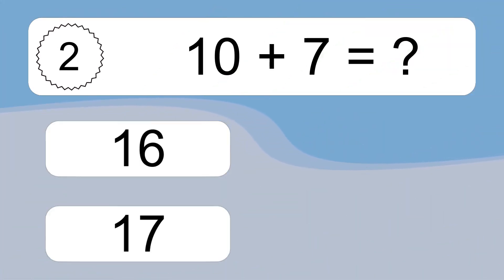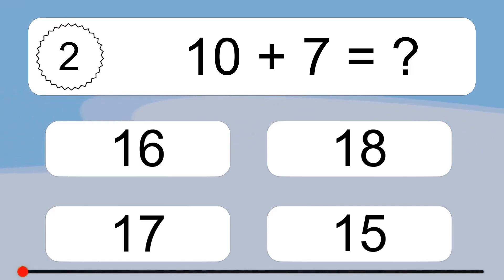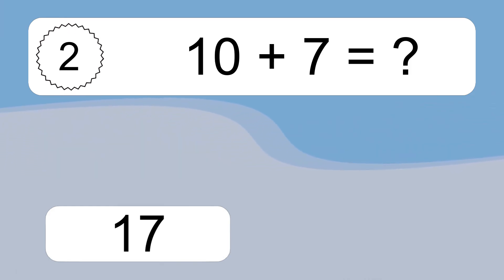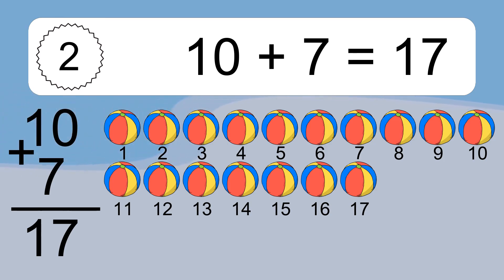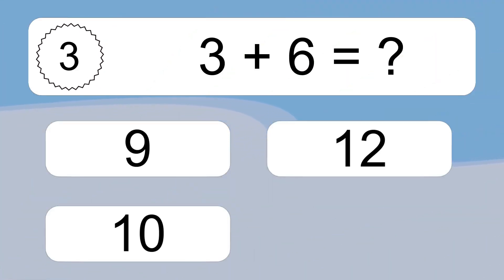10 plus 7 equals what? 10 plus 7 equals 17. Let's count it: 1, 2, 3, 4, 5, 6, 7, 8, 9, 10, 11, 12, 13, 14, 15, 16, 17.